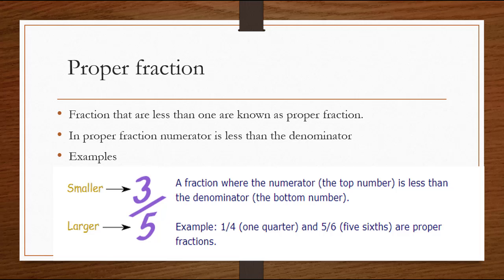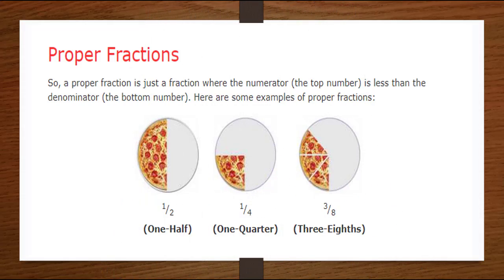Here are some more examples: one over four and five over six. In both examples, the numerator is less than the denominator, so both one over four and five over six are also proper fractions. A proper fraction is a fraction where the numerator — the top number — is less than the denominator. More examples of proper fractions: one over two, one over four, and three over eight. In all these fractions, the numerator is less than the denominator.